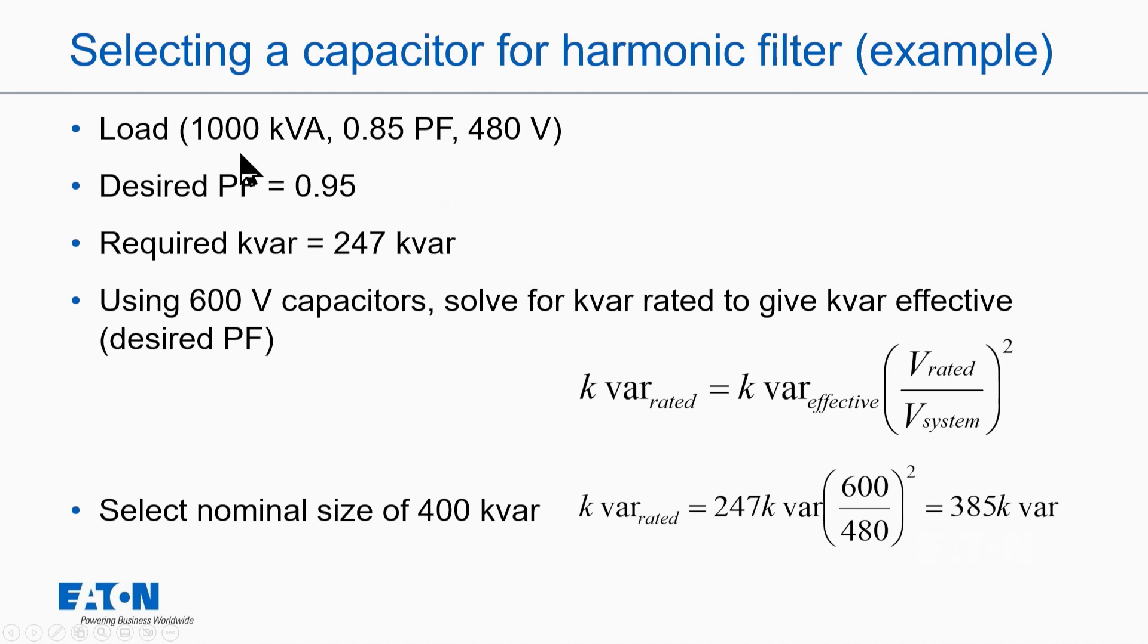So if I put in a load that's a thousand kVA, 0.85 power factor, and my desired power factor to eliminate my penalty will require 247 kvar. In order to use the higher rated voltage caps, I put that 600 here on this side of the equation. And I know how much I want out of it,